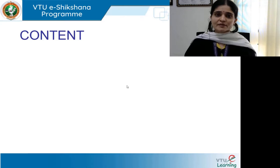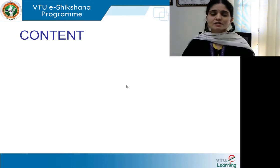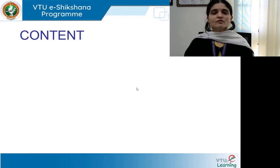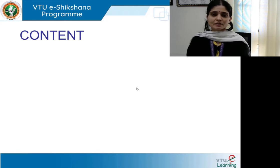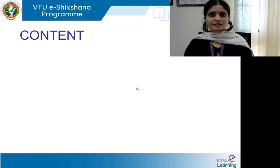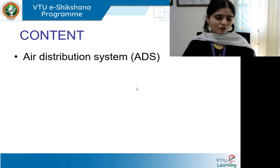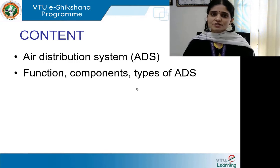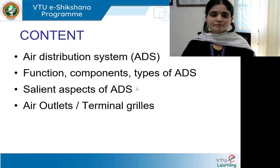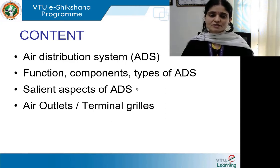So far, what we have done in the sessions is understood the various air conditioning types — unitary and central. Now we have come to the next step of understanding the air distribution system and designing the ducts in the HVAC layout. This session today will give an overview of air distribution systems, their function, components, types, and a glance at the air outlets or terminal grills.